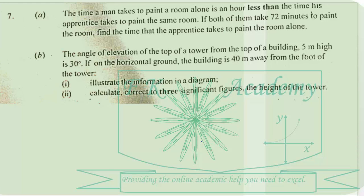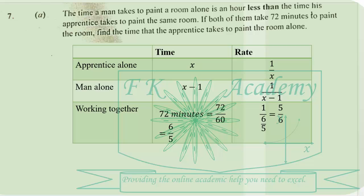So let's tackle the a part. We can organize the details like this. If the apprentice takes x then the man will take x minus 1, and working together both of them will take 72 minutes converted to hours is 6 over 5. Then the rate at which they are working is 1 over x, 1 over x minus 1, and 5 over 6.